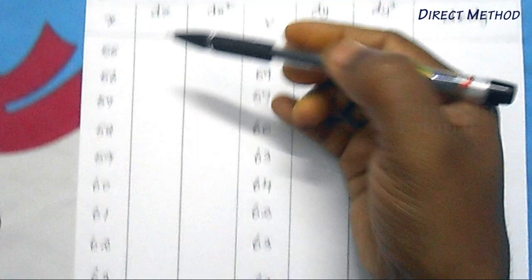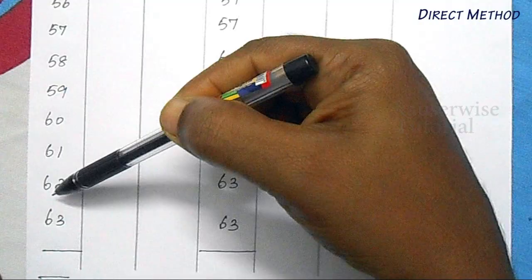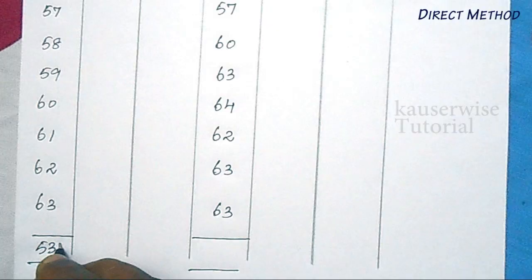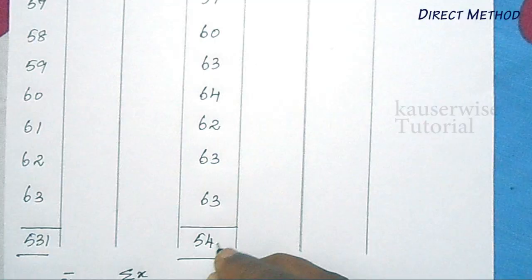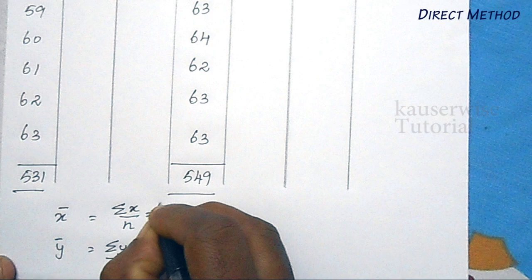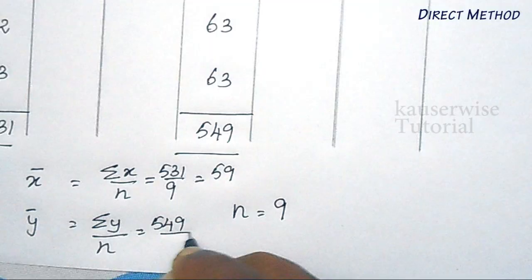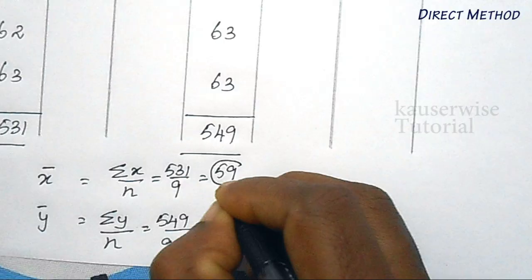There are 9 observations, so n = 9. The x series total is 531 and the y series total is 549. x̄ = 531 ÷ 9 = 59. In the same way, ȳ = 549 ÷ 9 = 61. So x̄ is 59 and ȳ is 61. The second step is complete — we have calculated x̄ and ȳ.